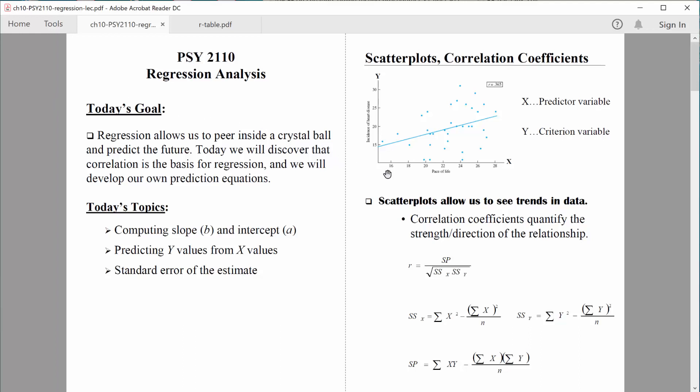Think about some of the things we've learned already about how two variables are related. Just by looking at our raw data in a scatterplot, we can get a sense of how the two variables are related. So for example, in this particular graph, we're looking at as the predictor variable, the pace of life.